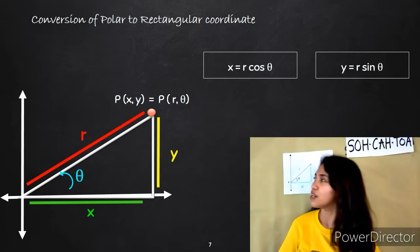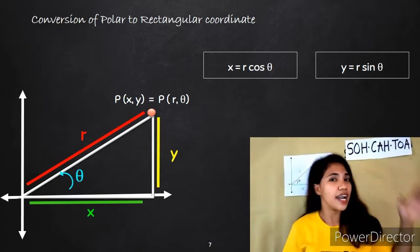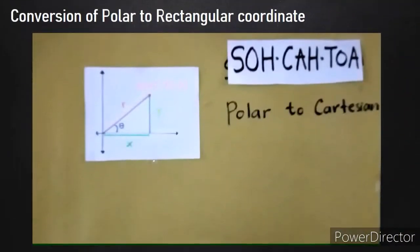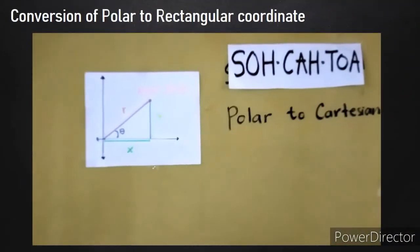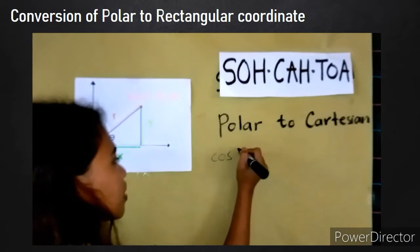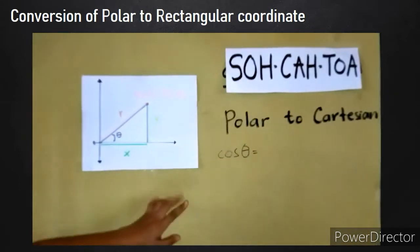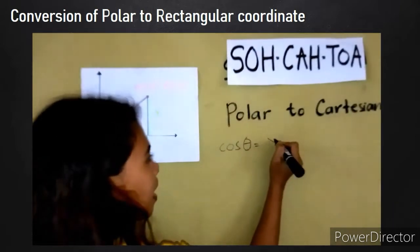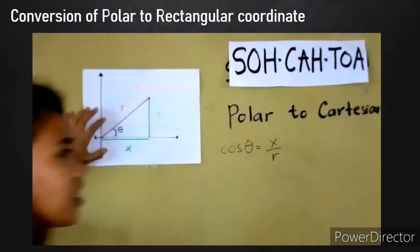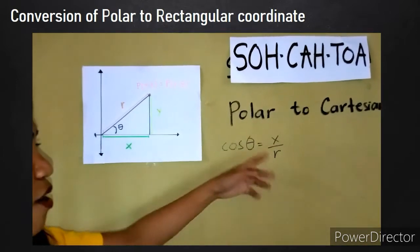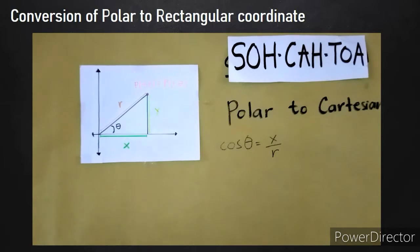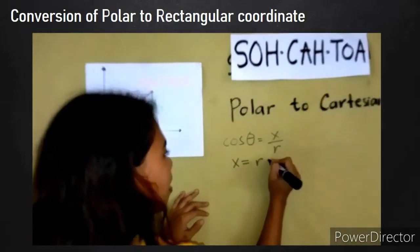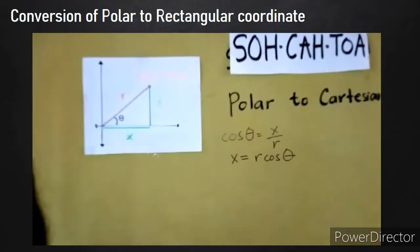How did we arrive with those formulas? Using this figure and the basic trigonometric concepts, we can derive those formulas. We know that cosθ is equal to adjacent over hypotenuse, which is x over r. So in converting polar to Cartesian coordinates, we derive the formula: x is equal to r cosθ.